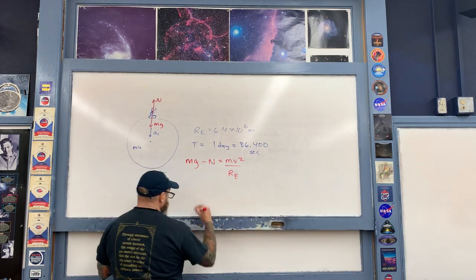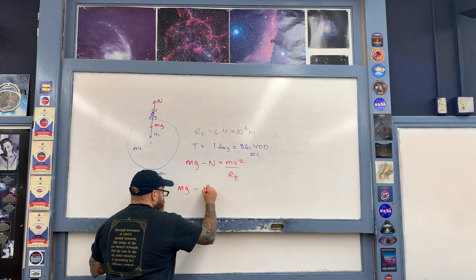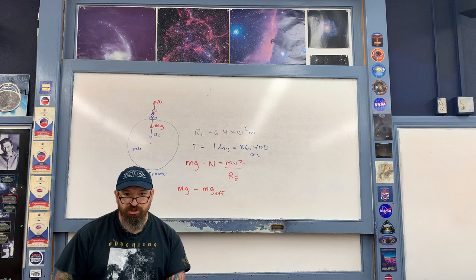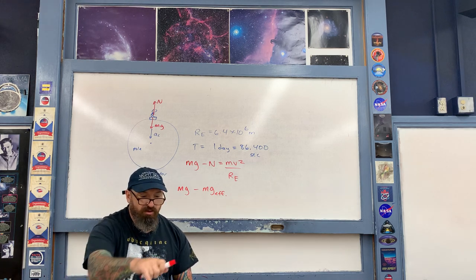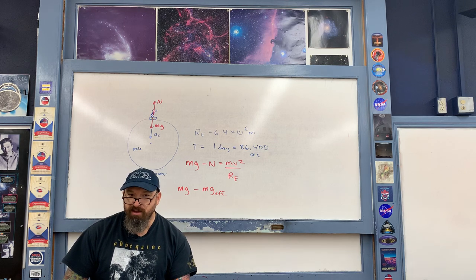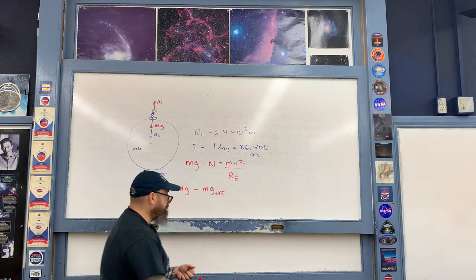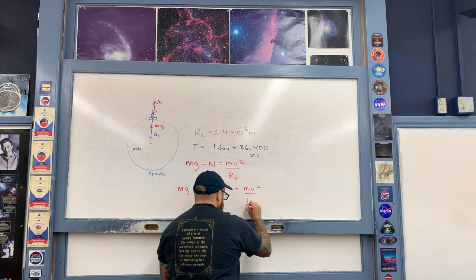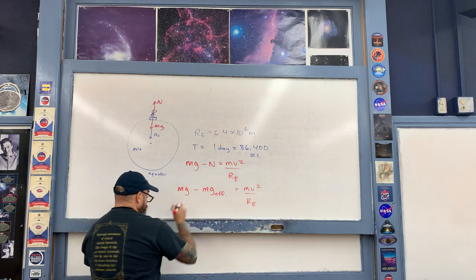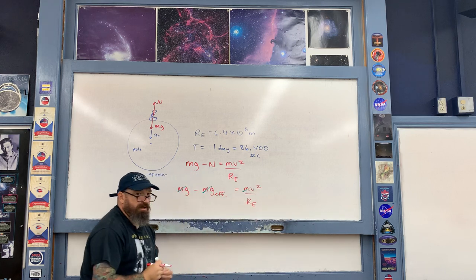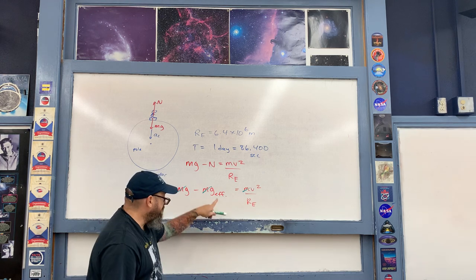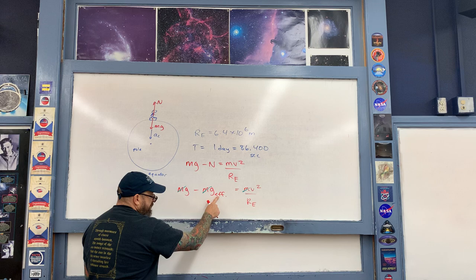Think of the normal force, the apparent weight, as being equal to the mass of the person multiplied by what we're trying to find: the effective or apparent value of g. In other words, if you were standing at the Earth's equator and you did a free fall experiment, what we're asked to find here is what you would measure. As we're going to find, it's a little bit less than 9.8 m/s². The right-hand side of the equation is the same as before, and notice that the mass cancels out. So everybody feels the exact same value of g at the surface of the Earth.